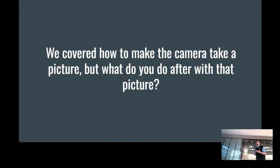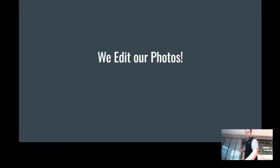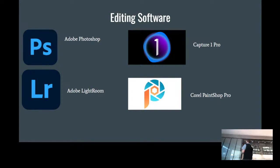Now we'll move into the editing part. We've covered how to take a picture, but what do we do after? Now we've taken all our photos — the kids' baseball game, vacation photos, pictures of the new puppy — now that you have the images, what do you actually do? We start by editing. These are the editing software I'd recommend. These four can utilize the RAW file format, so with any of them you'll be able to edit a full RAW photo.